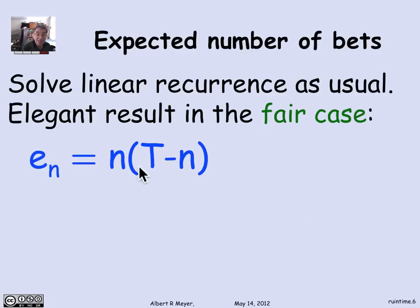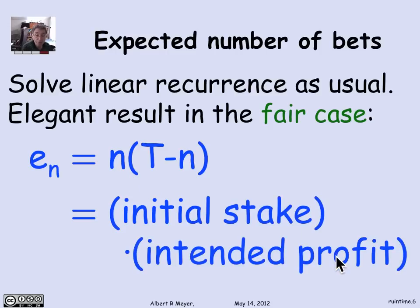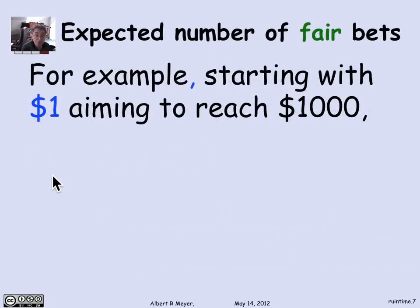In the fair case, the expected time turns out to be N times (T minus N), which means, to rephrase it in words, it's the initial stake times the intended profit. It's a very clean and elegant result: the expected time in the fair game until you terminate — either with winning or going broke — is initial stake times intended profit.